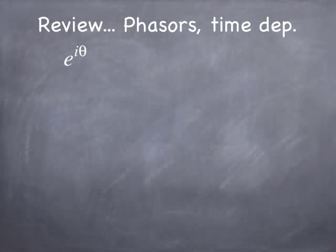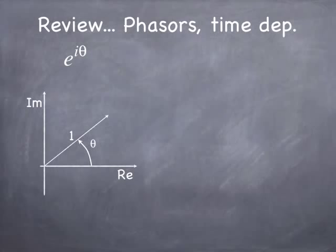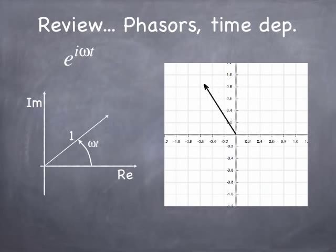So you remember that we have this thing, e to the i theta, from the Euler relation. You know that that can be thought of as a kind of an arrow in the complex plane that makes an angle theta with the real axis. We also know that in quantum mechanics, these phasors change in time, and they change in time in a way that depends on the energy. So we'd replace the theta with an omega t, where omega is given by the Einstein relation.